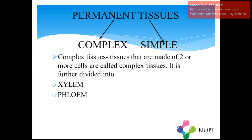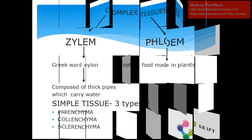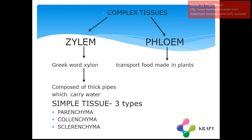Permanent tissues are divided into two parts: complex tissues and simple tissues. Complex tissues are made up of two or more cells and are further divided into xylem and phloem. Xylem is derived from a Greek word meaning 'wood' and is composed of thick pipes that carry water and other fluids needed for the plants. Phloem helps in the transport of food made in the leaves.